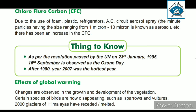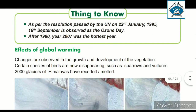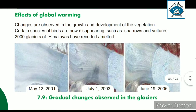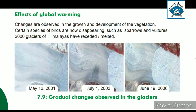Now we will see the effects of global warming. Changes are observed in the growth and development of the vegetation. Changes have been seen in growth and development in our vegetation, and some species — some birds — are now not visible at all, like sparrows, vultures, etc.